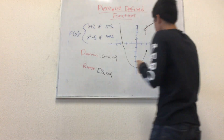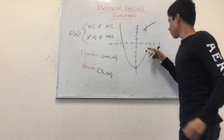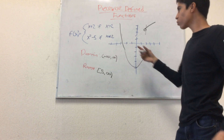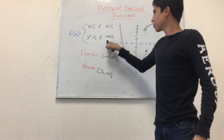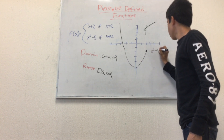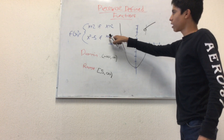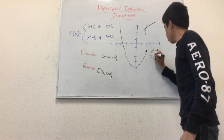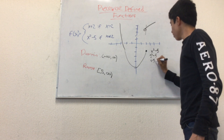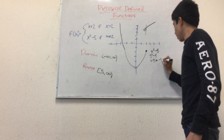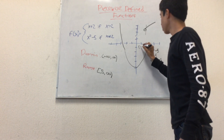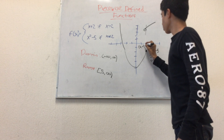We can also find the coordinates. To get the coordinates, we substitute the boundary value into the equation. So for x squared minus 5, since x is 2, we compute 2 squared minus 5, which is 4 minus 5, which is minus 1. So the coordinates for this piece at the boundary are (2, -1).